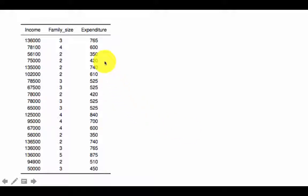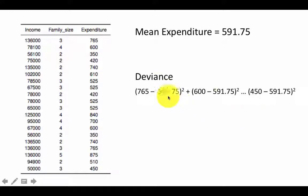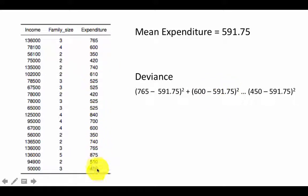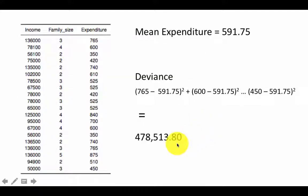Let's return to our original dataset. We can compute the deviance as defined: the mean expenditure across all values is 591.75. The deviance is computed by taking each term individually — 765 minus 591.75 squared, plus 600 minus 591.75 squared, and so on up to 450 minus 591.75 squared. That sum of squared deviations turns out to be approximately 478,514.